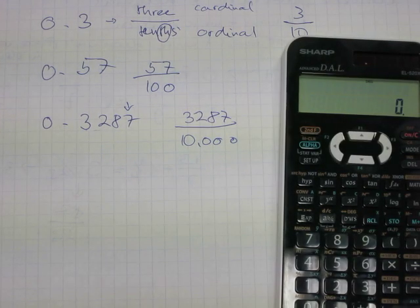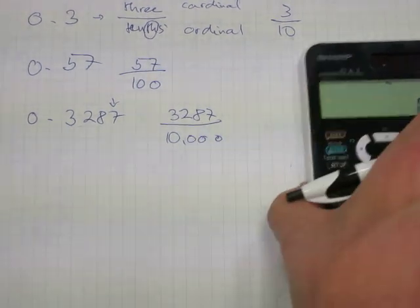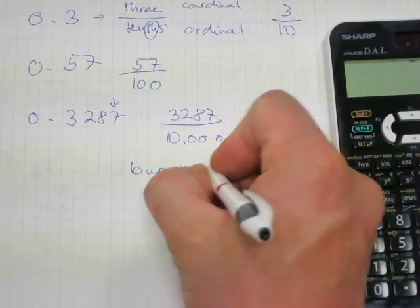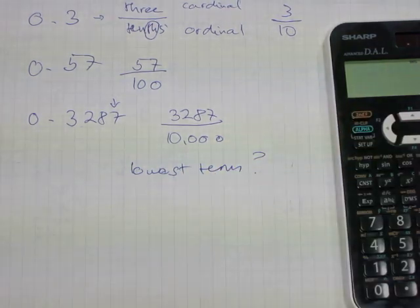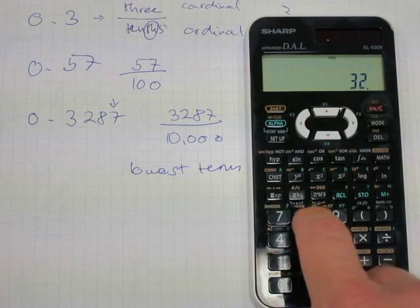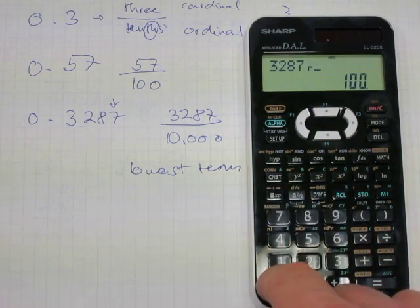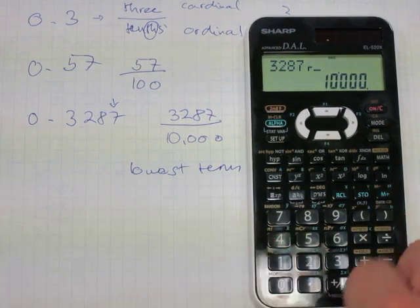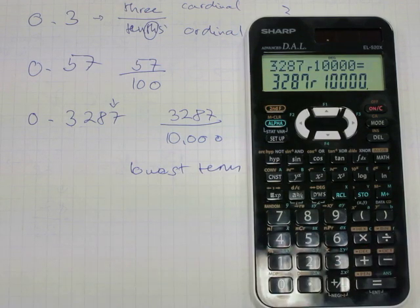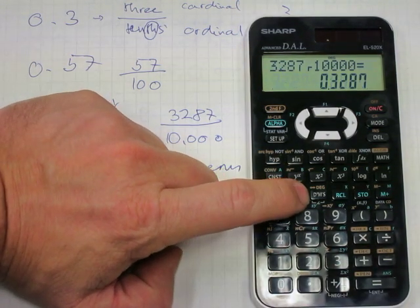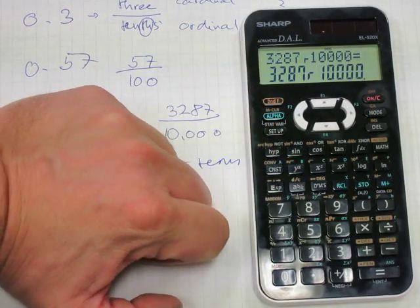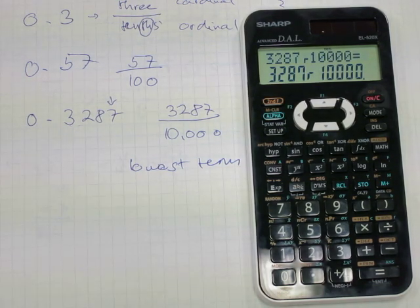Now if you want to know if indeed this is the fraction in its lowest term, or can it be simplified, enter it into the calculator. 3287 ABC button, 10,000, like that, and press equals. See what happens. You got the same number back. So this one cannot really be simplified any further. That's its decimal format. Second function, ABC. Yep, you get the same number back. This one cannot be simplified.